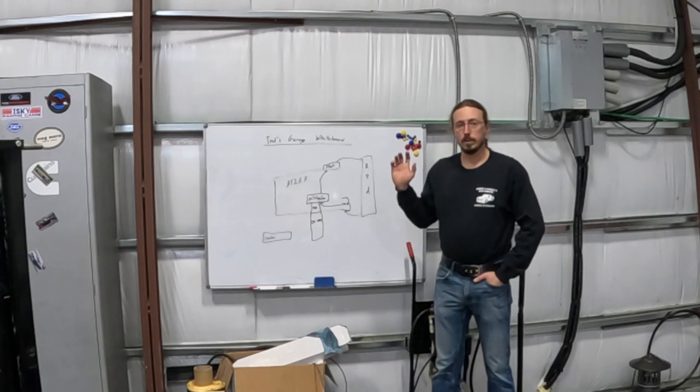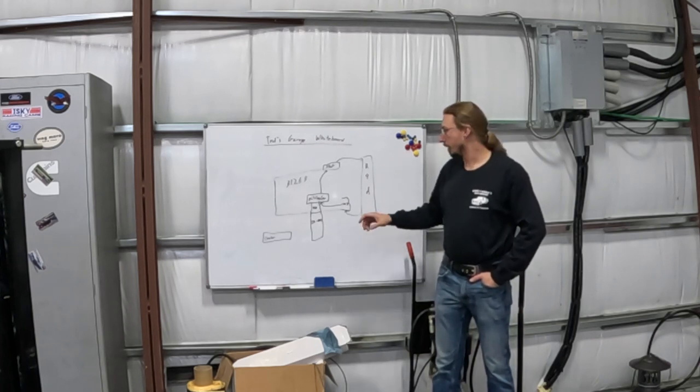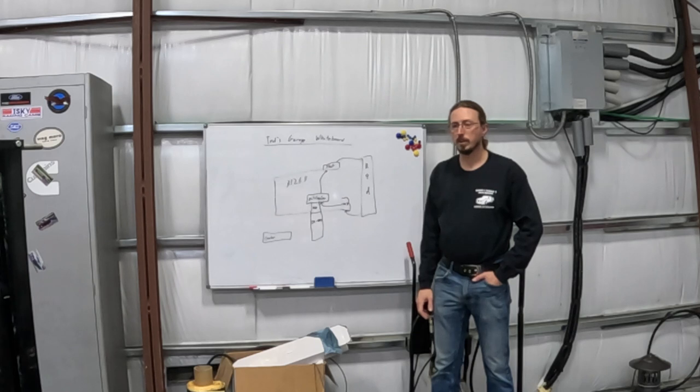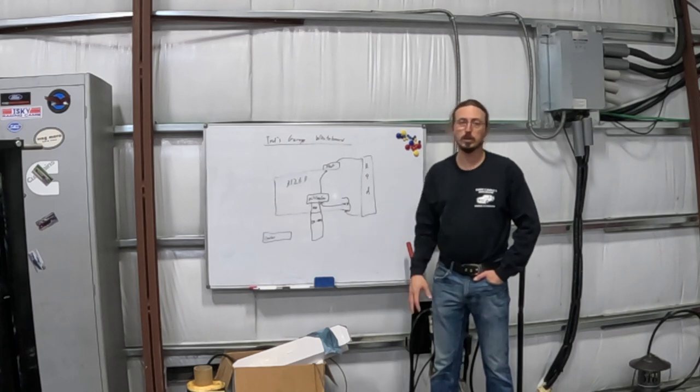So the stock 3126B does have an oil cooler from the factory. It is built into the side of the block. It's actually, in my opinion, a decent design, but not the best in the world, certainly not the most serviceable. I have another video or two about when it started leaking from that area.